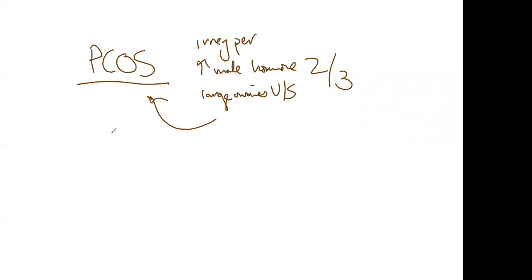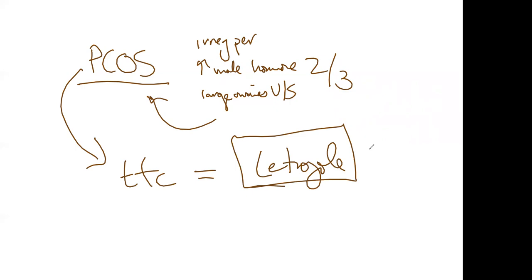When you should use one versus the other is real simple. If someone meets the definition of PCOS, which is irregular periods, elevated signs of male hormone, or large ovaries on ultrasound. If they have two out of three of these criteria, they meet the definition of PCOS. In those patients with PCOS who are trying to get pregnant, letrozole has been demonstrated to be more effective than clomid head-to-head. Letrozole is the preferred agent in patients with PCOS.